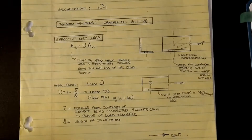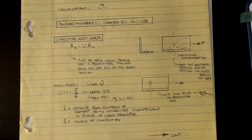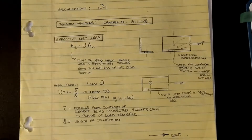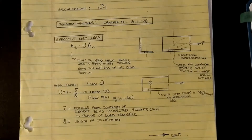Welcome back, steel design friends. In our last video we talked about the different types of strength equations needed to analyze tension members. We talked about gross yielding and then began the basic discussion of net fracture and net areas. But we also said there were some caveats to calculations involving that value. The net fracture case actually uses something called the effective net area, and that's the purpose of this video.